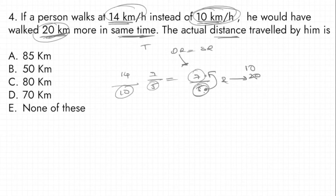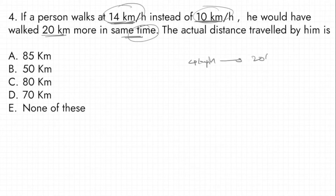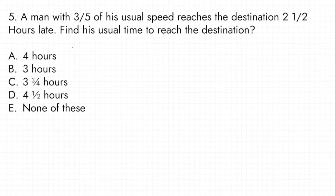The distance ratio is 7 by 5. The difference between distances is 20 km. So 2 parts equal 20 km, meaning 1 part equals 10 km. The actual distance at 10 km/h is 5 parts, which equals 50 km.